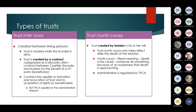A trust inter vivos is created between living persons while the founder is alive, by means of a contract categorized as a stipulatio alteri — a contract between two parties for the benefit of a third party. Contract law applies to the formation and revocation of this type of trust and to the acquisition of rights by beneficiaries, but the Trust Property Control Act applies to its administration.